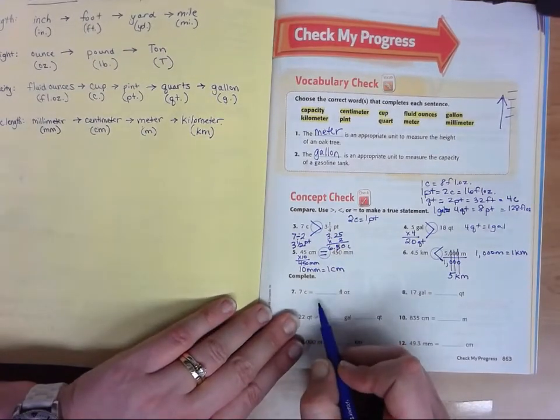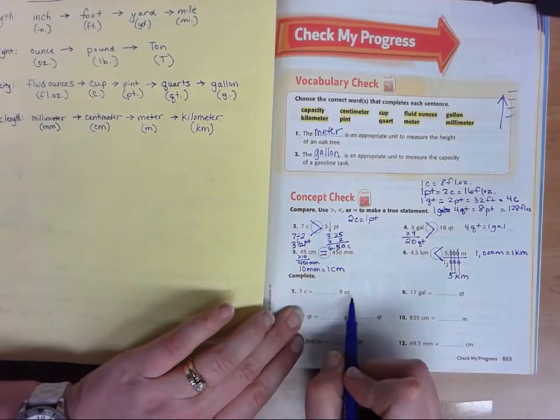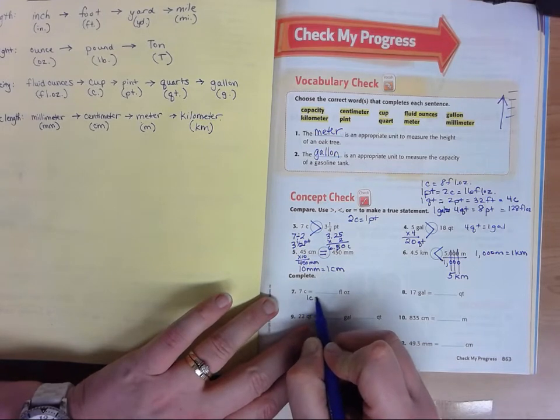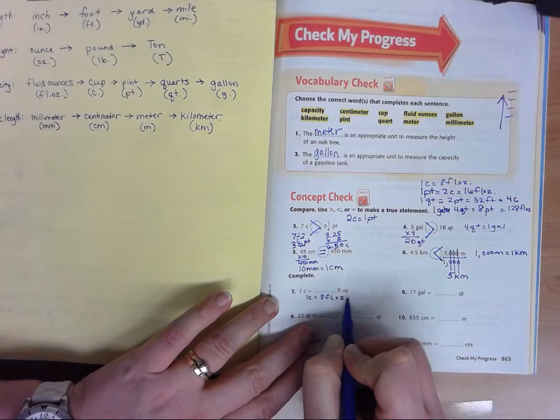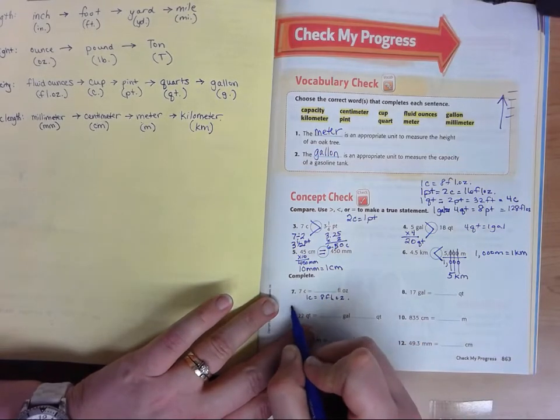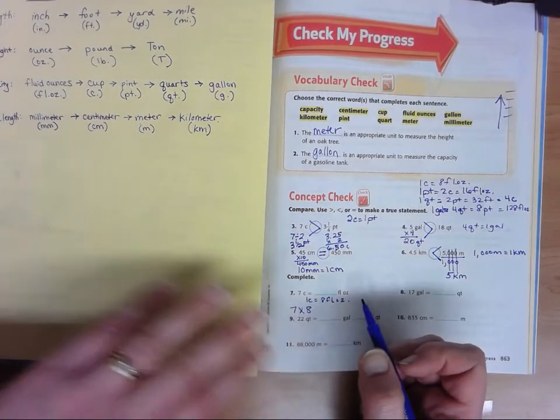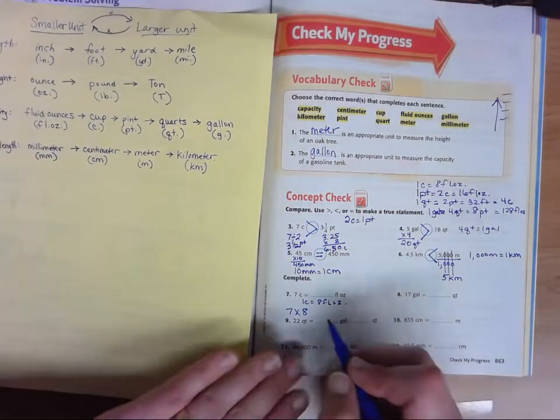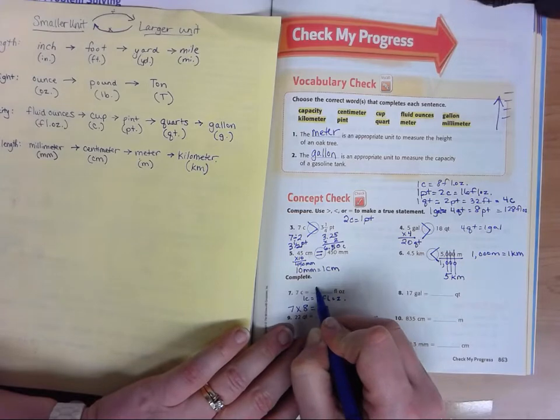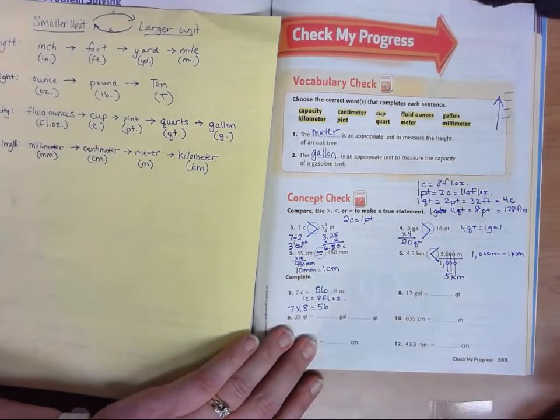If we look at number seven, seven cups to fluid ounces. Well, we know in one cup, there's eight fluid ounces. So now we have seven of them. So we take seven times eight. Remember cups to ounces, big to little, we would multiply. Seven times eight is 56. So seven cups is 56 fluid ounces.